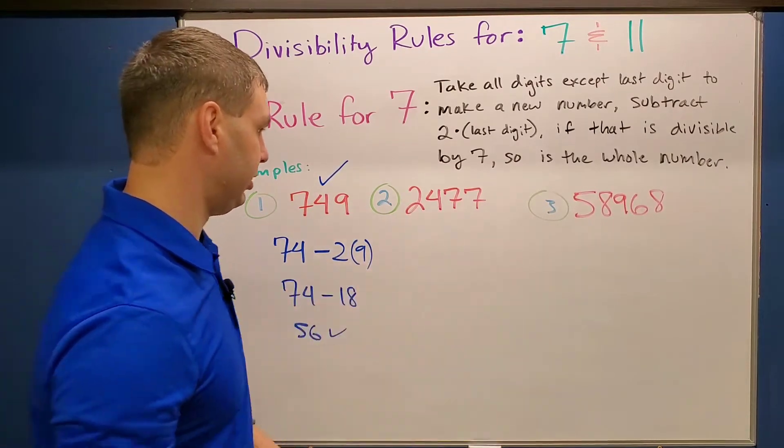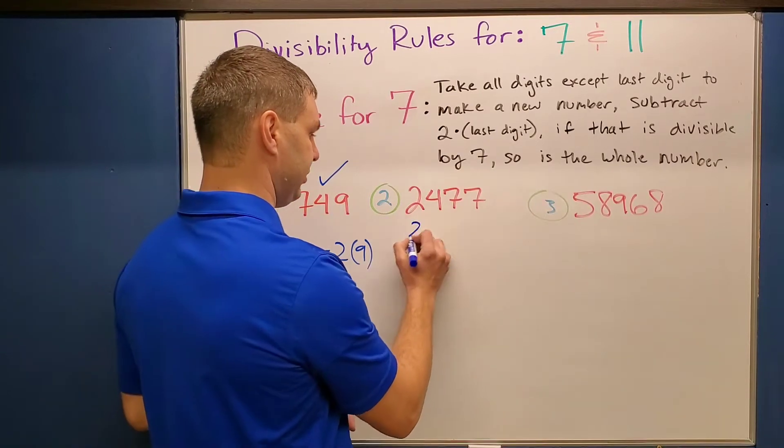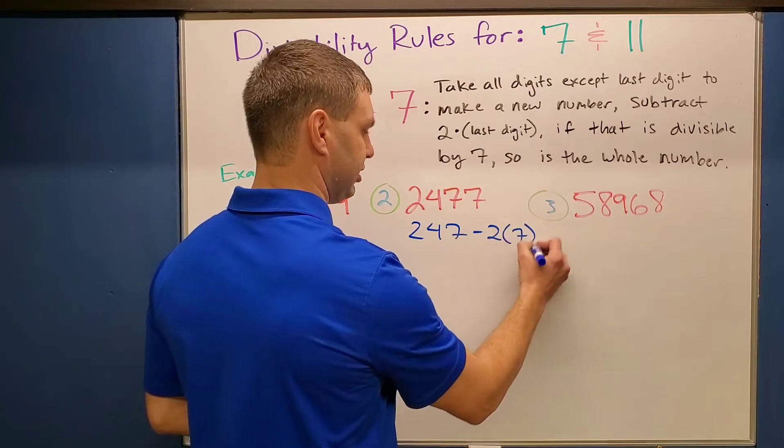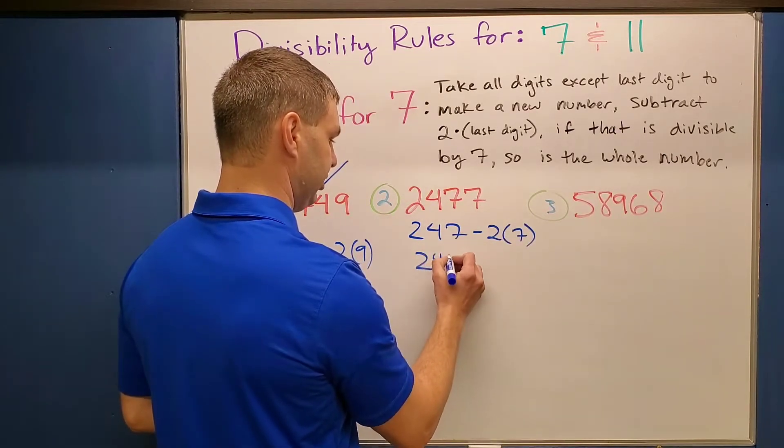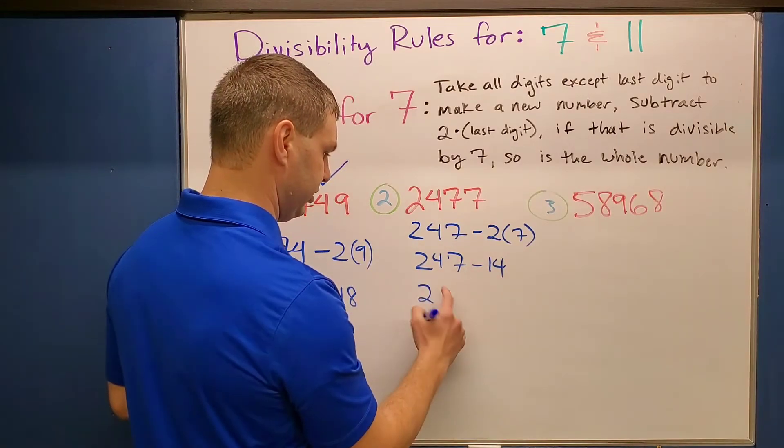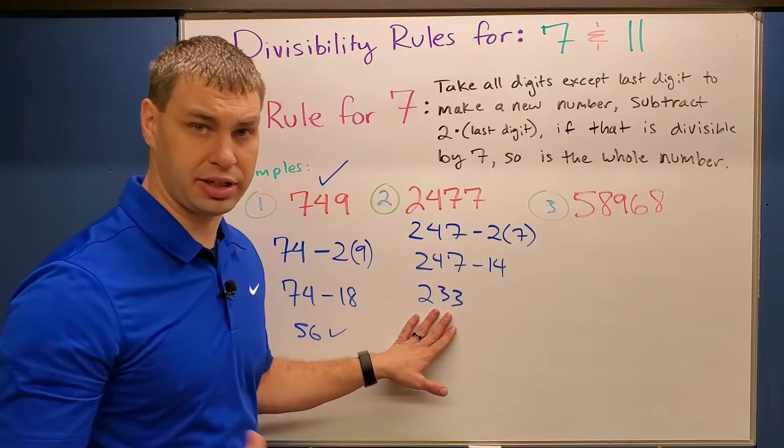Let's try a little bit of a bigger one. This time, 2,477. So again, take my first few digits here except for the last one. Subtract 2 times that last digit, and this is going to be 247 minus 14. And that would be 233. Okay, if you're still not sure, you can do it again.